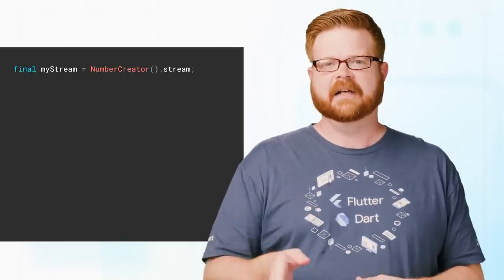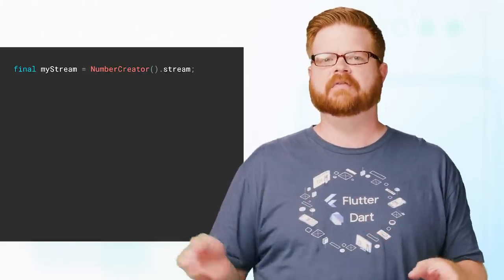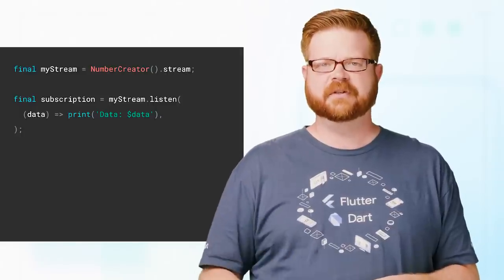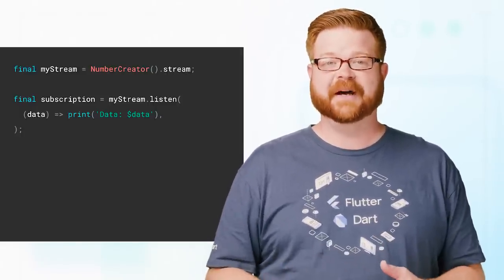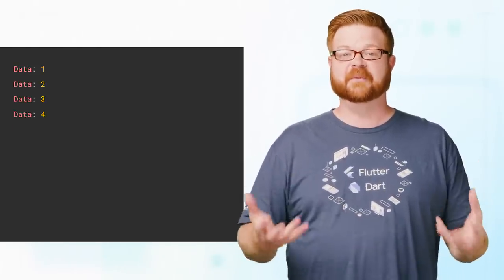Say I have a class that will give me a stream that kicks out a new integer once per second. One, two, three, four, five. I can use the listen method to subscribe to the stream. I give it a function, and every time a new value is emitted by the stream, my function gets called and prints it. That's how listen works.